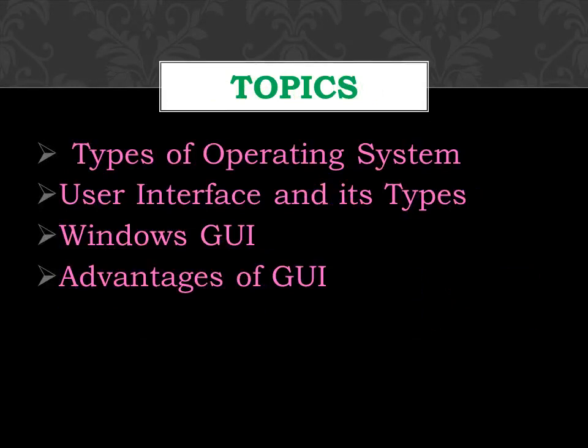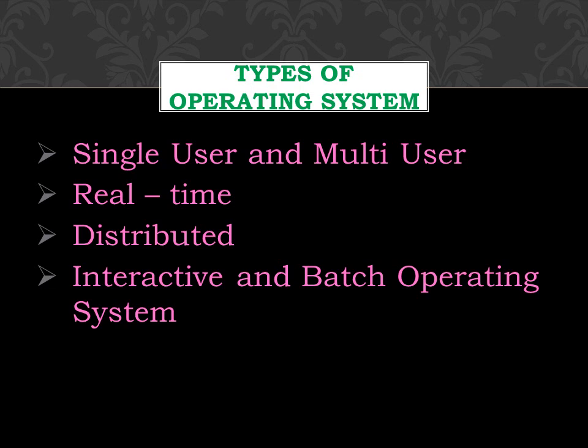Now we learn about types of operating systems, user interface and its types, Windows, GUI, and advantages of GUI. There are various types of operating systems: single user and multi-user, real-time, distributed, interactive, and batch operating system.